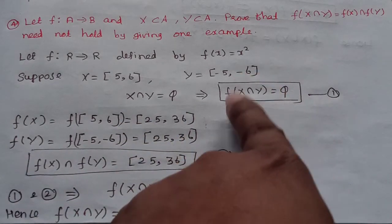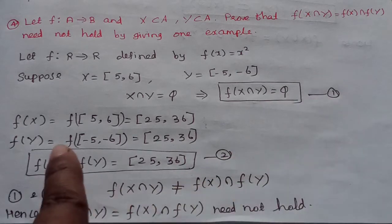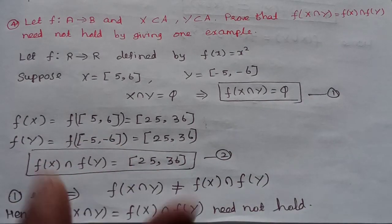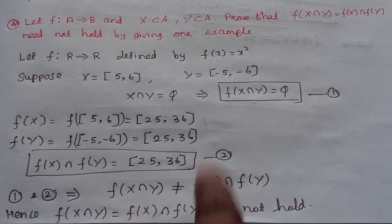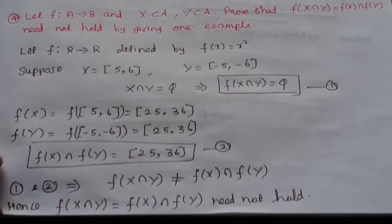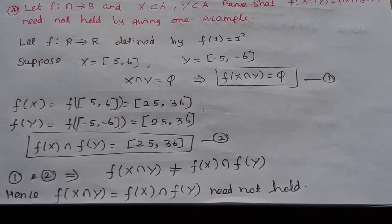Now from ① and ②: f(X∩Y) = ∅, but f(X)∩f(Y) = [25,36]. Hence, f(X∩Y) = f(X)∩f(Y) need not hold.